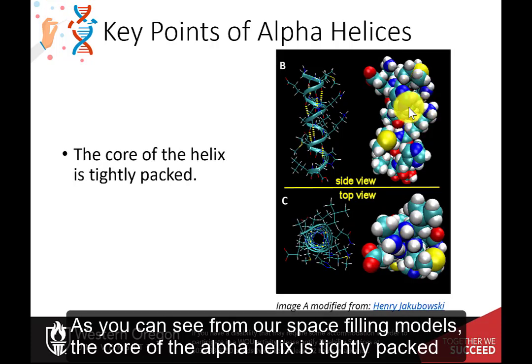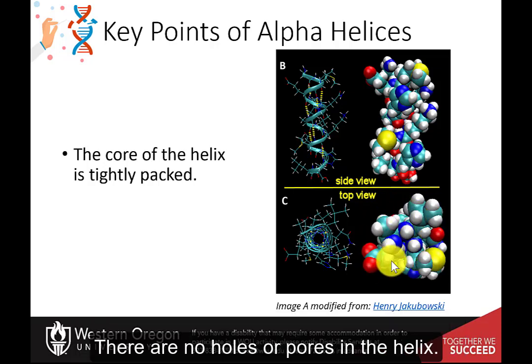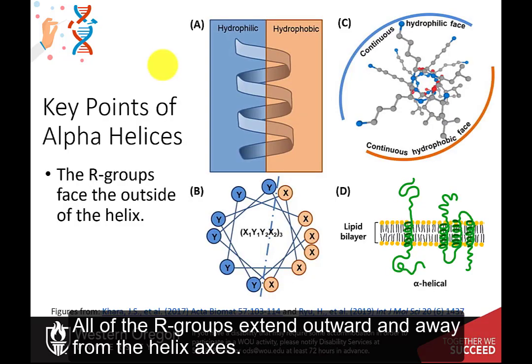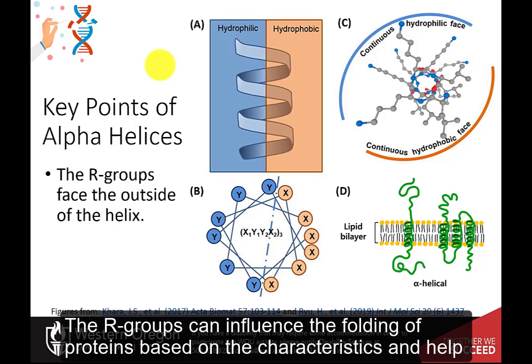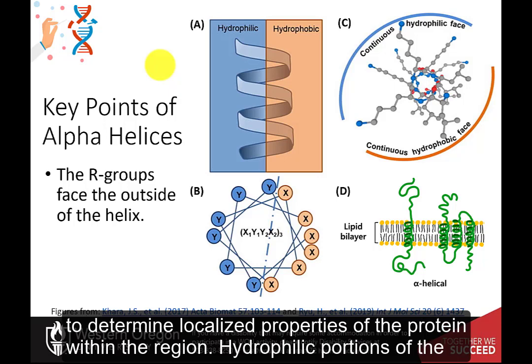As you can see from our space-filling models, the core of the alpha helix is tightly packed. There are no holes or pores in the helix. All of the R groups extend outward and away from the helix axis. The R groups can influence the folding of proteins based on their characteristics and help to determine localized properties of the protein within the region.